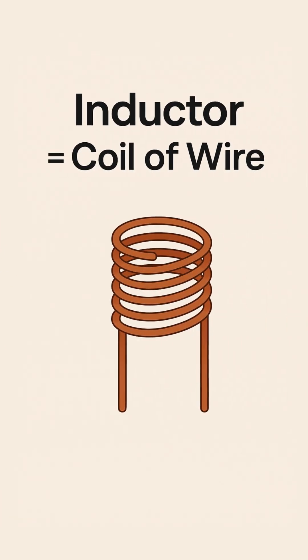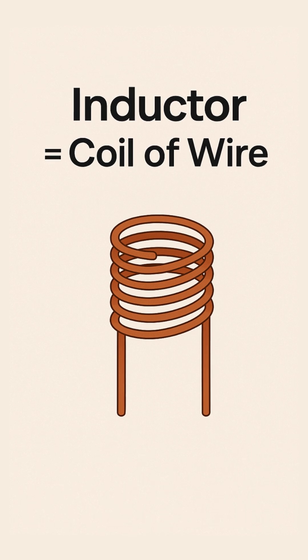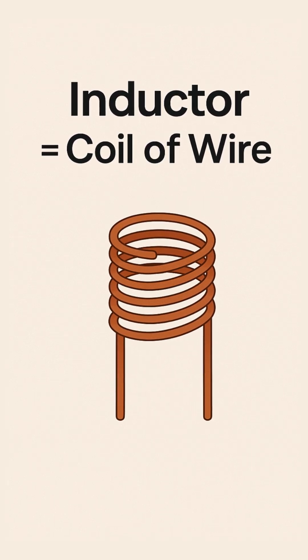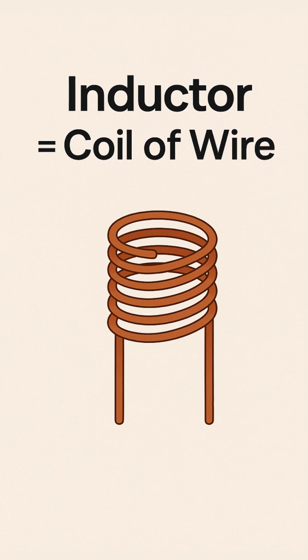What is an inductor? An inductor is basically just a coil of wire. But when current flows through it, something magical happens - it creates a magnetic field.